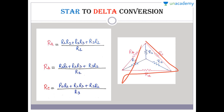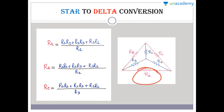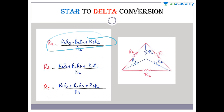In short, R1, R2, and R3 are resistances given in a star connection and we have to convert them into delta to find R_A, R_B, and R_C. To find R_A, there is a formula. First we need to find an equivalent resistance for the numerator. What we do is multiply the adjacent resistances: R1 into R2, then add R2 into R3, then add R3 into R1.